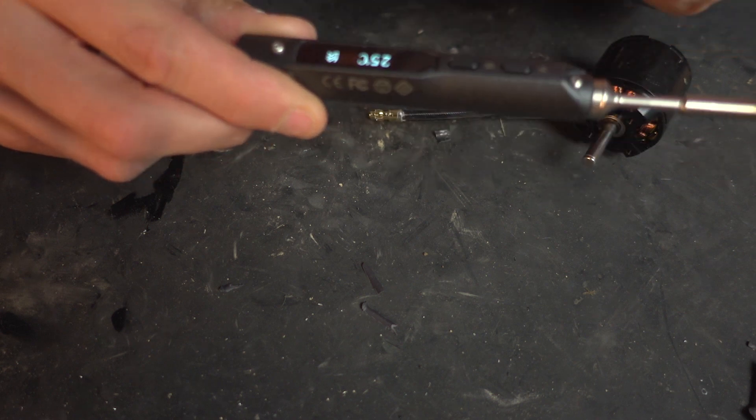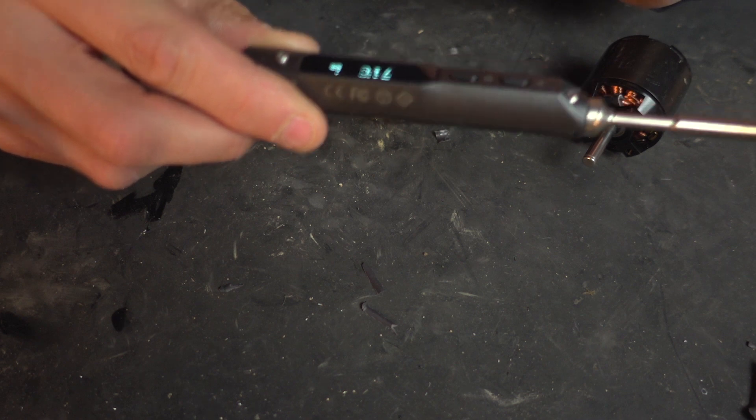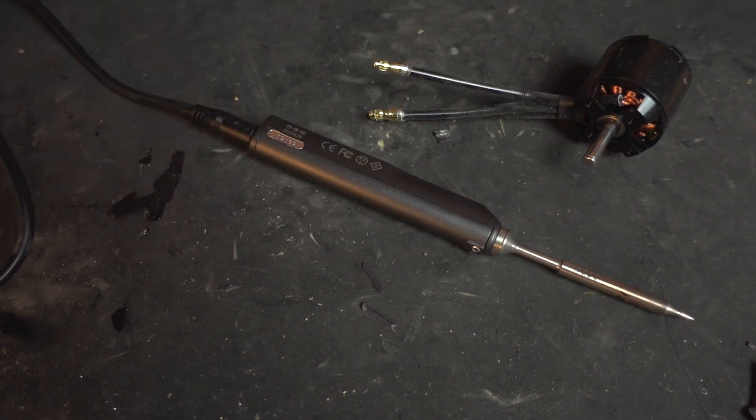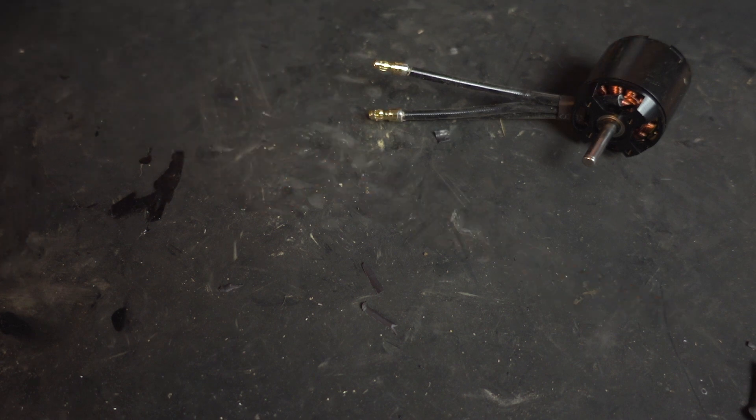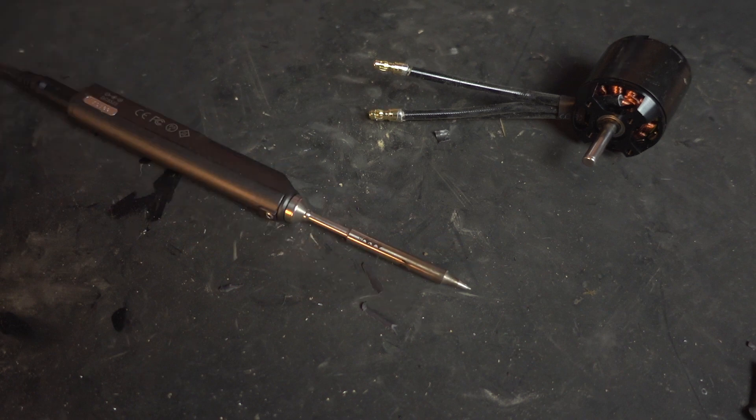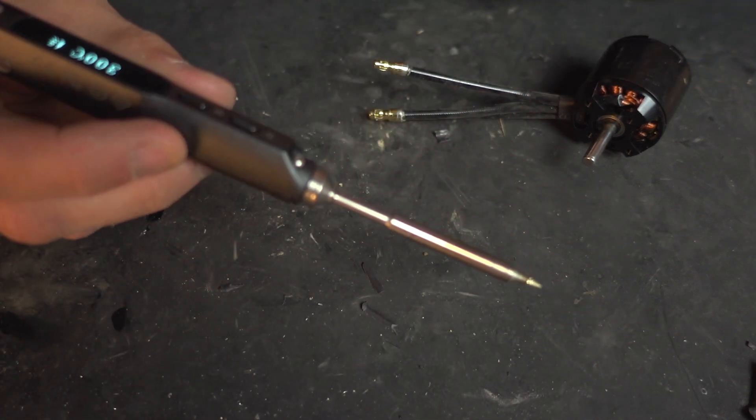Soldering iron plugged into a dean's to xt60 to an xt60 to whatever the soldering iron is, DC5225. With the soldering iron you press to turn it on and it gets hot.